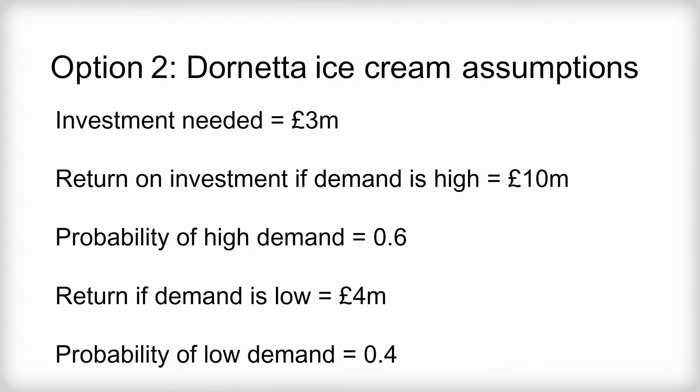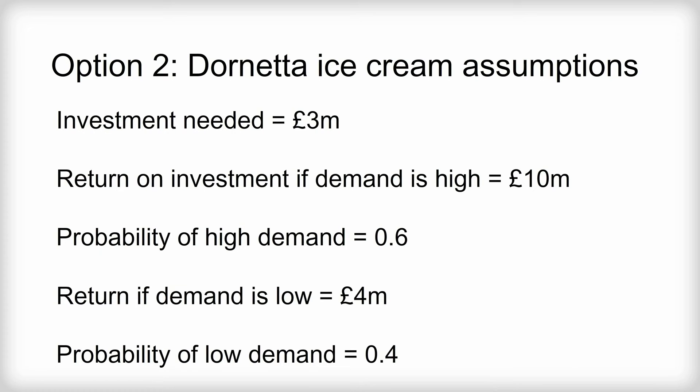Here's a summary of the figures for options two and three. For Dornetta, the investment needed is £3 million. The return on investment if demand is high is £10 million, with a probability of high demand of 0.6. The return if demand is low is £4 million, with a probability of low demand of 0.4.